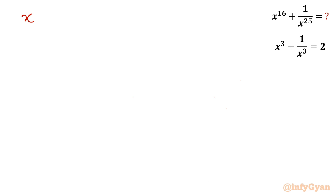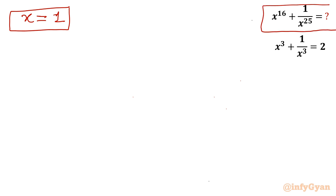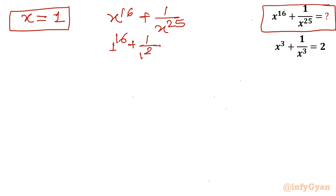Now we put all three values into the expression x^16 + 1/x^25. Starting with x = 1: 1^16 + 1/1^25 = 1 + 1 = 2. So for x = 1, the answer is 2.